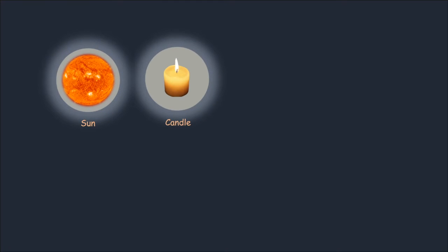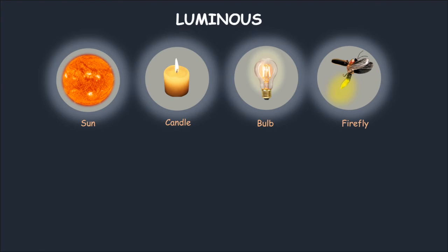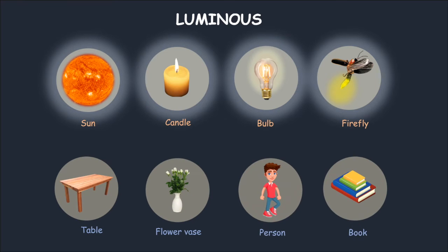Sun, candle, bulb, and firefly are luminous objects. The objects that do not give out or emit light of their own are called non-luminous objects or illuminated objects. For example, the objects like table, flower vase, person, and books do not emit light and are called non-luminous objects.